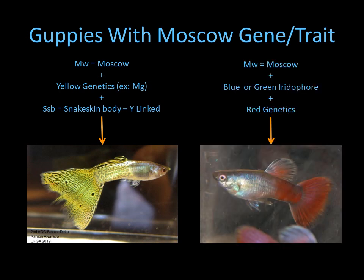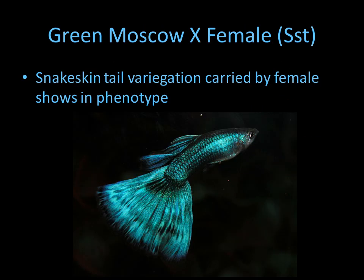Here's an experimental cross I did: I crossed a green Moscow to a red female. As you can see it shows the Moscow in the anterior body, but the peduncle area — the red passed on from the female — is pretty much the dominant phenotype in the peduncle area of this male. Here I crossed a solid green Moscow male to a female that had the snakeskin tail trait, and as you can see all the variegation came through. That shows that even though the male Moscow is solid, crossing to a female with variegation genetics it can show up in the phenotype.